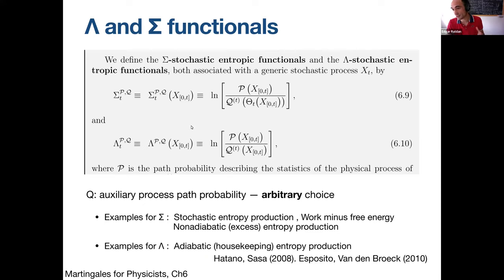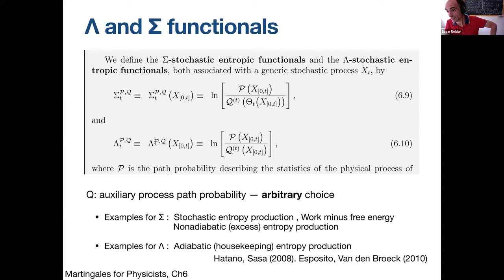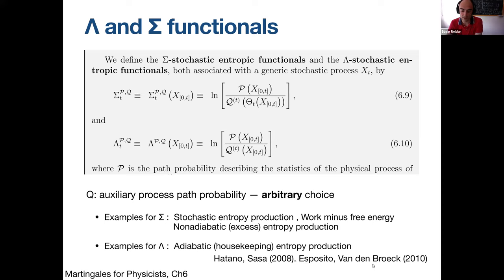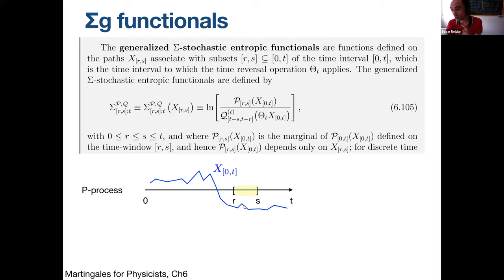There are two classes of functionals. The sigma class has P over Q evaluated on the time-reversed trajectory — the typical form entropy production takes. The lambda class is simpler: it is the probability to see the trajectory in process P divided by the probability in another process Q for the same trajectory, without time reversal. One particular case of the lambda functional is the housekeeping heat (adiabatic entropy production) introduced by Esposito and Van den Broeck. Lambdas are always martingales, but sigmas always need a compensator.